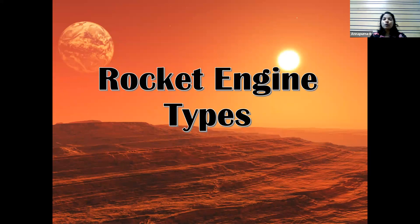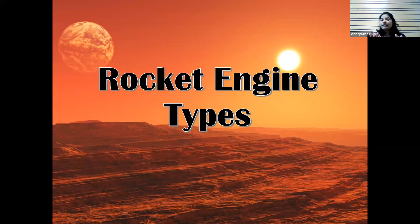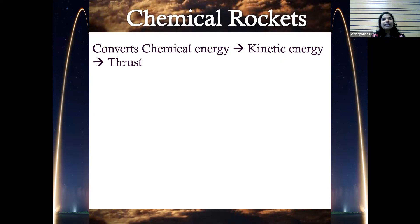Next, let's look at rocket engine types. Any engine is based on a fuel and oxidizer, and the source of those decides what kind of rocket engine you're developing. If you use chemicals, it's called a chemical rocket; if you use electricity, an electrical rocket; if you use nuclear energy, a nuclear propulsion system. Today we'll focus on the chemical rocket, which has the highest technology maturity and is most powerful for ascending between planetary atmospheres.